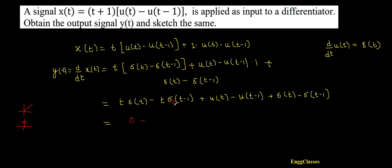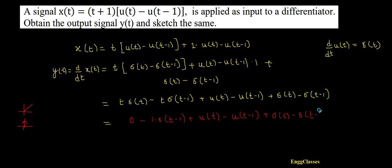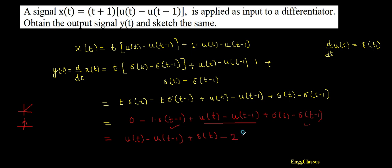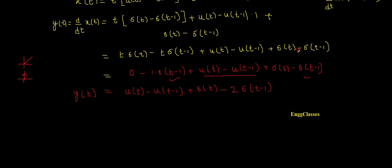Next, minus t·δ(t - 1): making use of the time-shifting property of the impulse signal, this becomes -1·δ(t - 1). Adding the remaining terms: u(t) - u(t - 1), plus δ(t), minus δ(t - 1), minus δ(t - 1) gives -2δ(t - 1). So the final output is y(t) = u(t) - u(t - 1) + δ(t) - 2δ(t - 1).